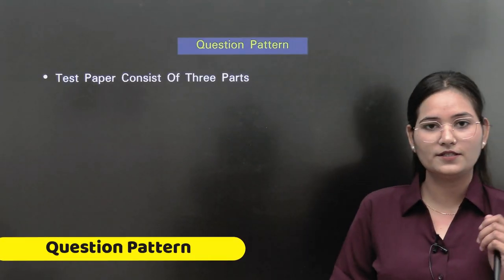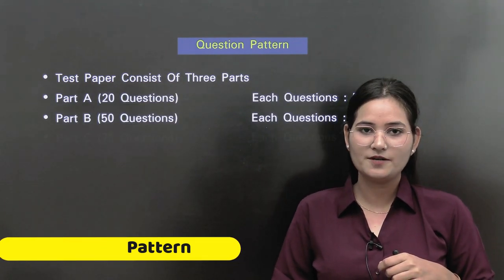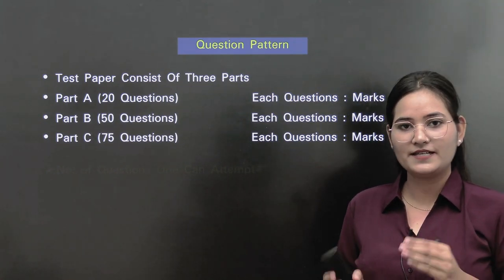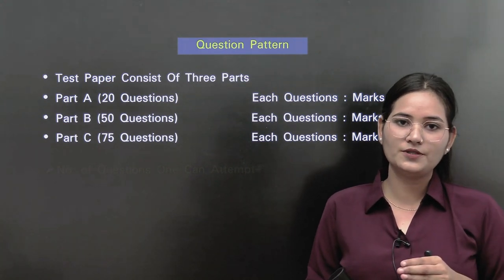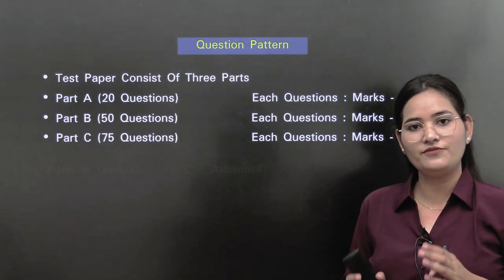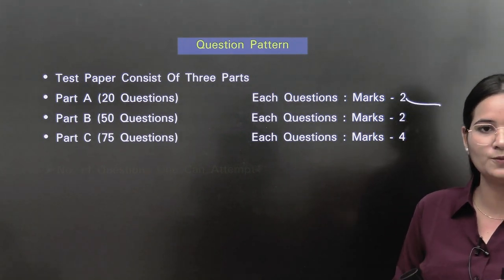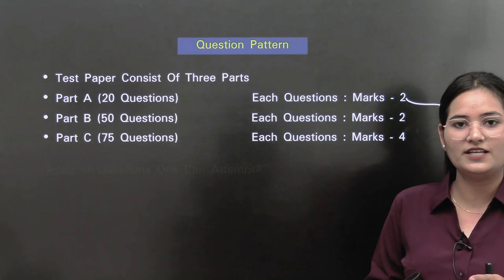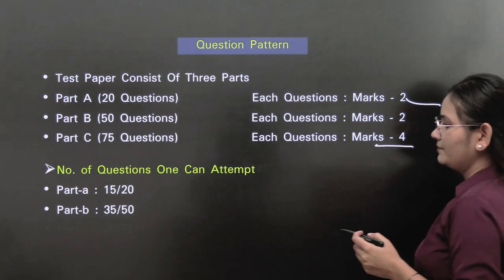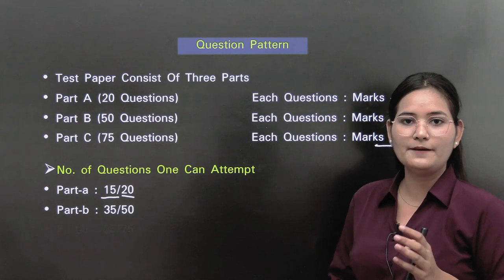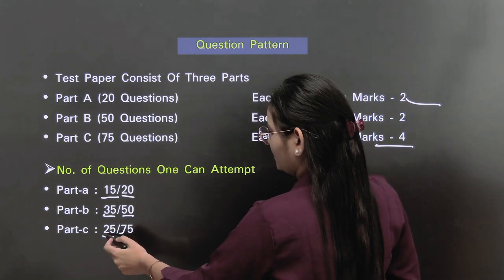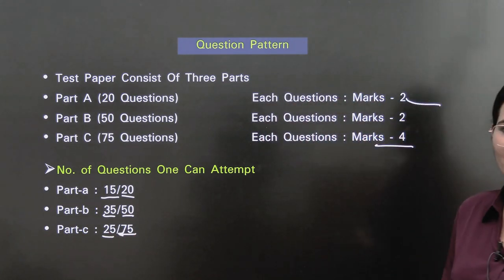The question paper is divided into 3 parts: Part A, Part B, and Part C. Part A has 20 questions, each carrying 2 marks. Part B has 50 questions, each carrying 2 marks. Part C has 75 questions, each carrying 4 marks. The number of questions to attempt: 15 out of 20 in Part A, 35 out of 50 in Part B, and 25 out of 75 in Part C.